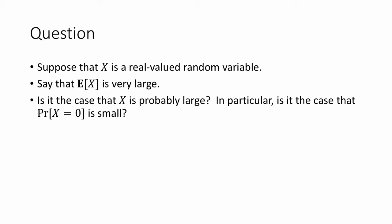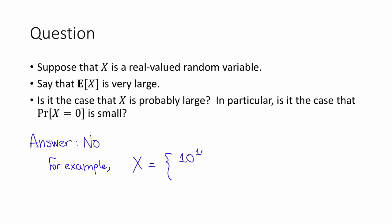So you've probably figured out that the answer is no, this is not necessarily true. For example, if x is a random variable which is equal to some very, very large number, like 10 to the 10 to the 10 to the 10, with probability 0.01 and 0 otherwise, then the expectation of x is really, really big, but the probability that x is non-zero is 0.01, which is small. However, in this case, this random variable x also has a really large variance.